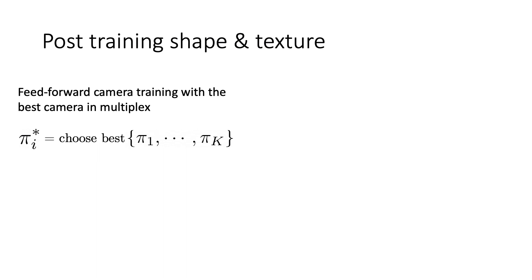After training the shape and texture predictor to convergence while optimizing the camera multiplex, we identify the most probable camera from each camera multiplex as pseudo ground truth pi star and use that for training a feed forward camera predictor.